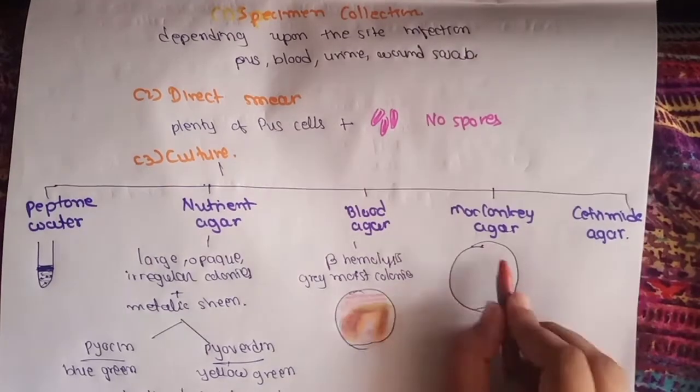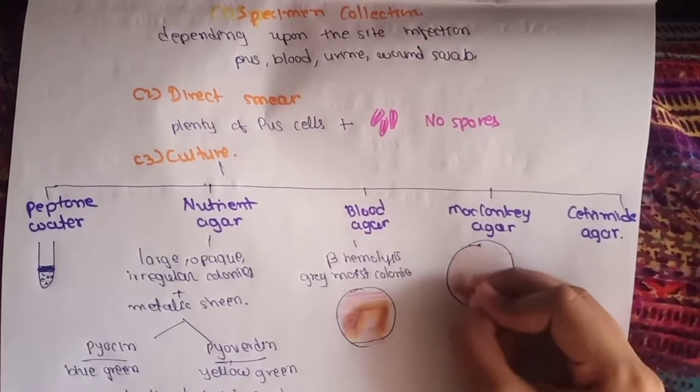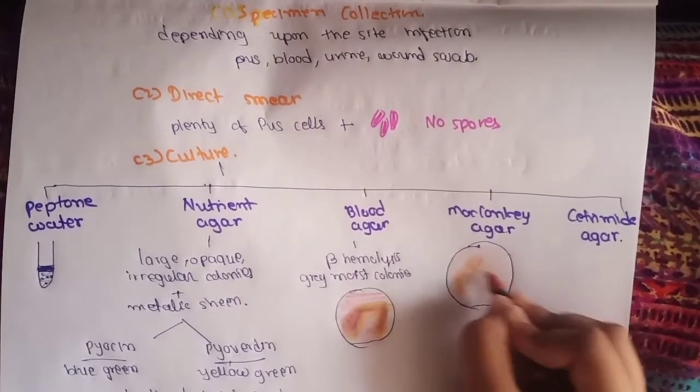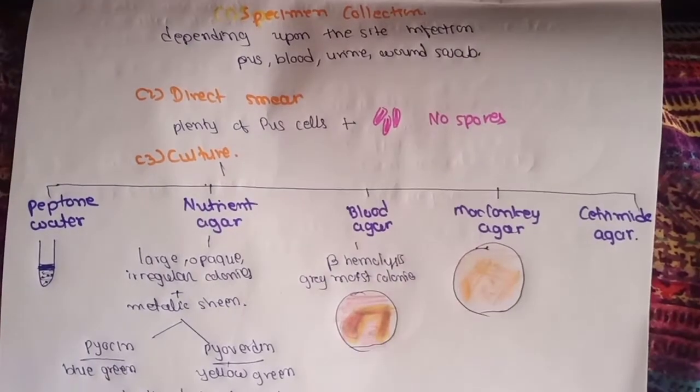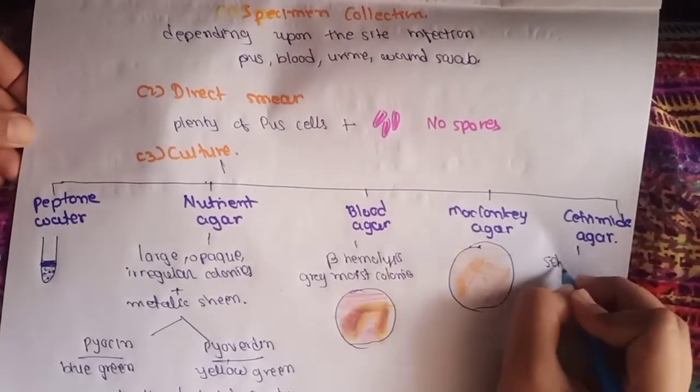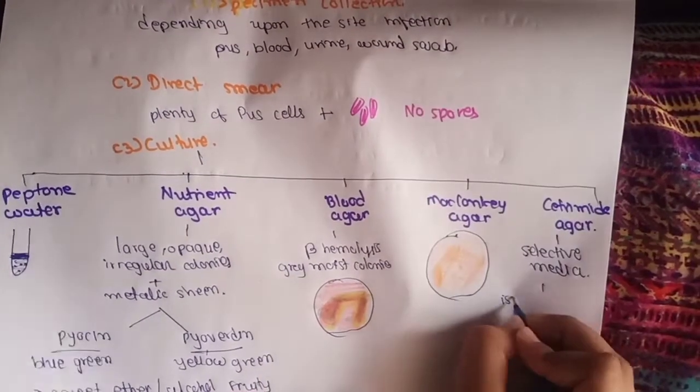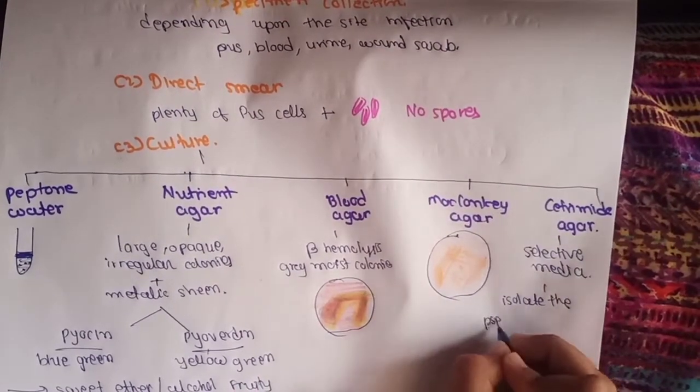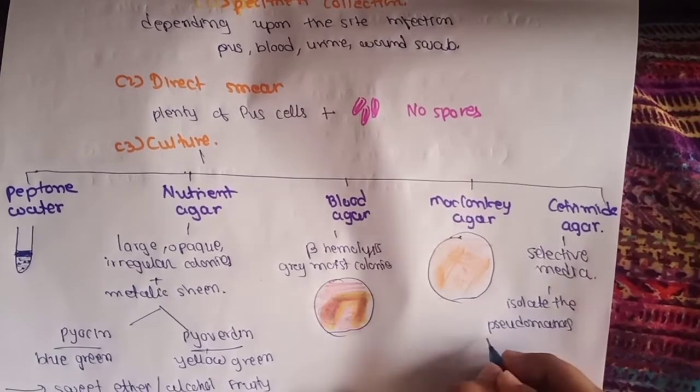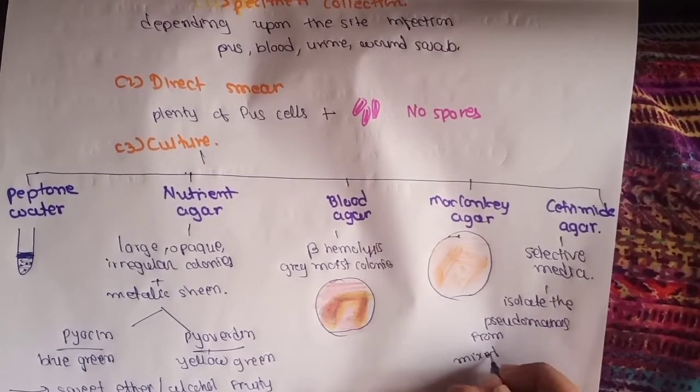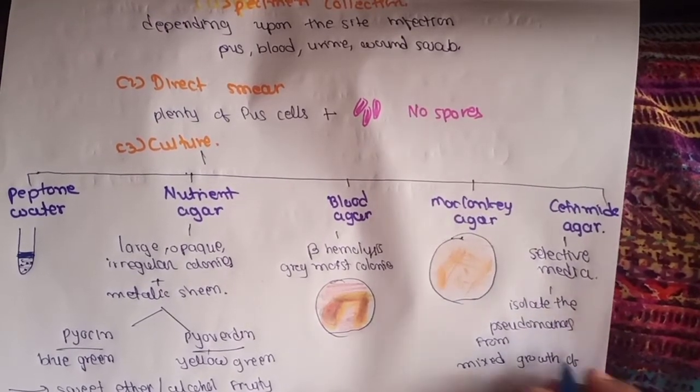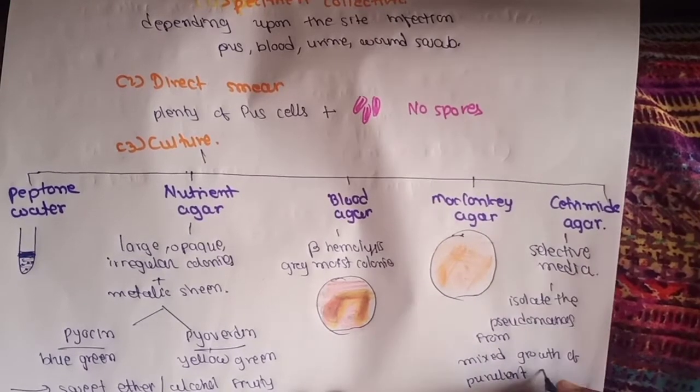On MacConkey agar, they will give non-lactose fermenter colonies, meaning pale colonies. We know that Pseudomonas is a non-lactose fermenter. Cetrimide agar is selective media useful for isolation of Pseudomonas from mixed growth of purulent specimens.